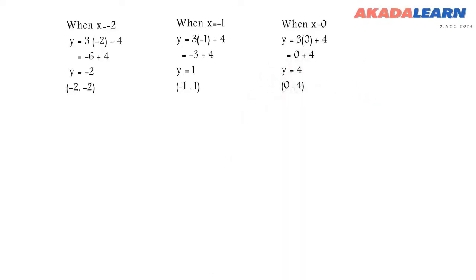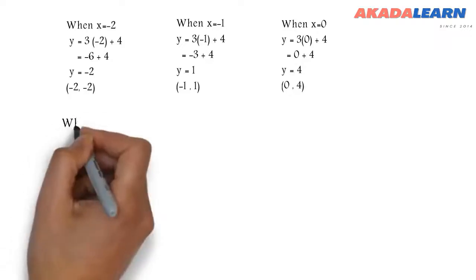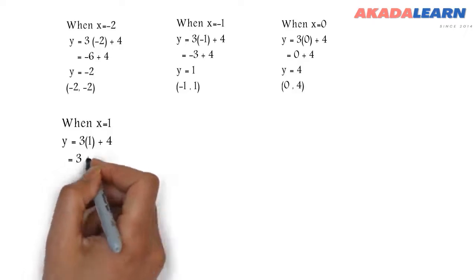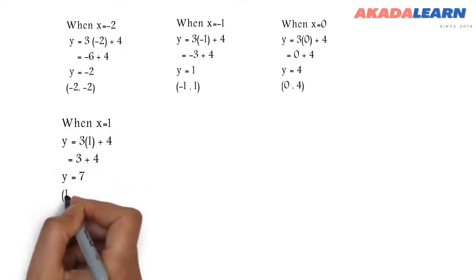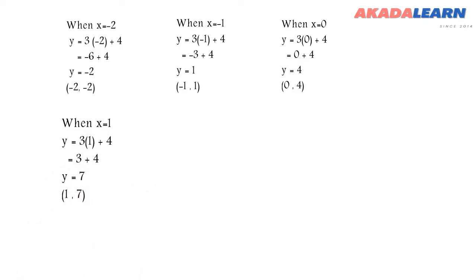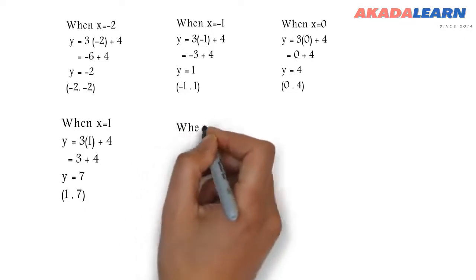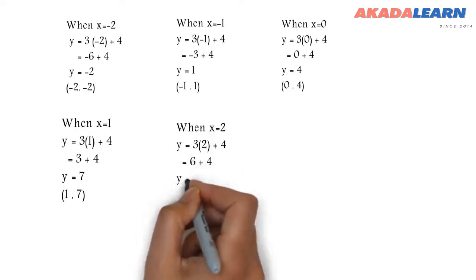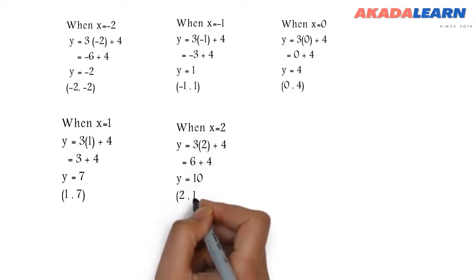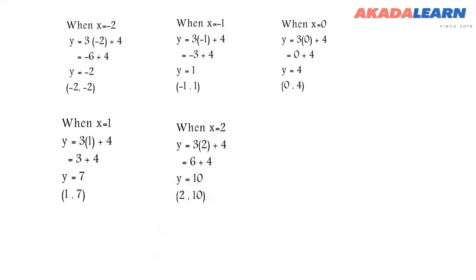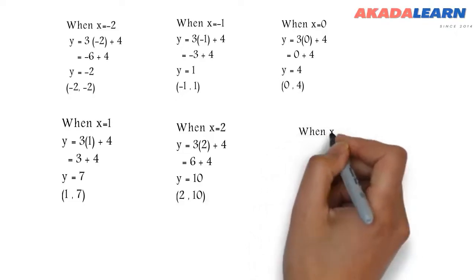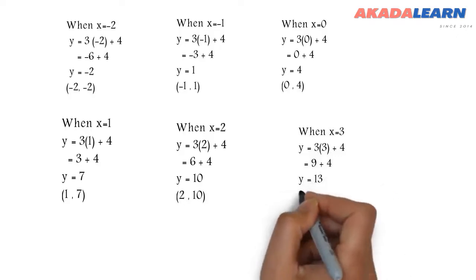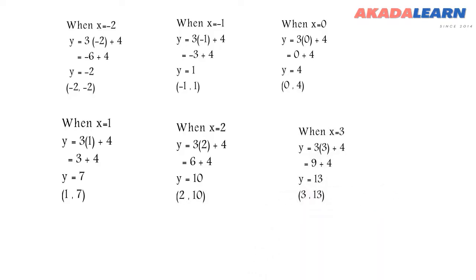Next, when x is 1, we substitute 1 into the equation and our y is 7, so (1, 7). When x is 2, we substitute x into the equation and we discover our y is 10, so (2, 10). Lastly, when x is 3, we substitute 3 into the equation and we discover that our y is 13, so (3, 13).